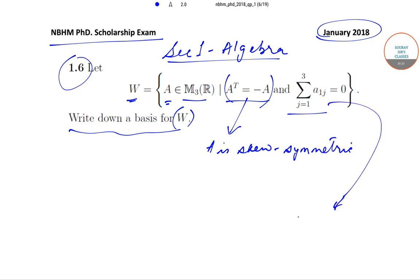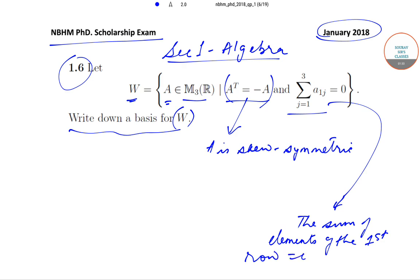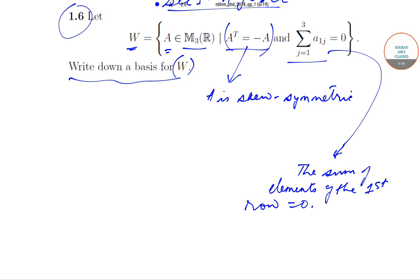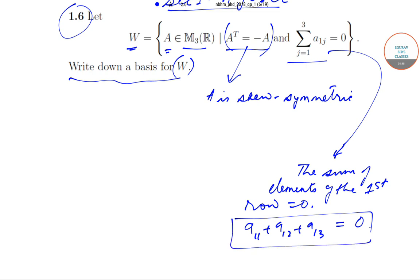From these conditions, we can get that A is skew-symmetric, and also that the sum of elements of the first row is equal to 0. We have a_{11} plus a_{12} plus a_{13} equals 0. This is the statement we have got, and since A is skew-symmetric that implies the diagonal elements are equal to 0.